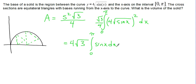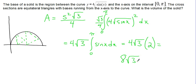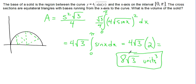We already know the integral from 0 to pi of sine X DX from the previous problem. When we integrated sine X, we got negative cosine X, and evaluating all of that out gave us 2. So from our previous problem, this becomes 4 root 3 times 2, or 8 root 3, units cubed.